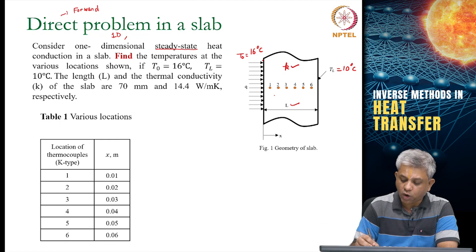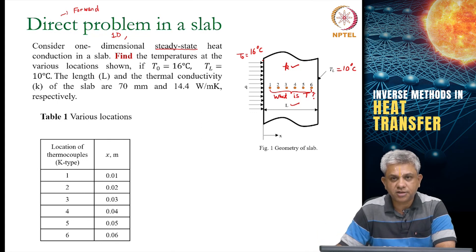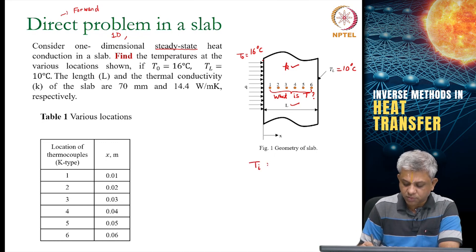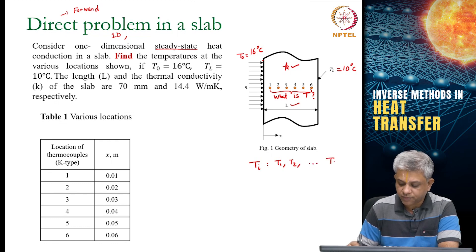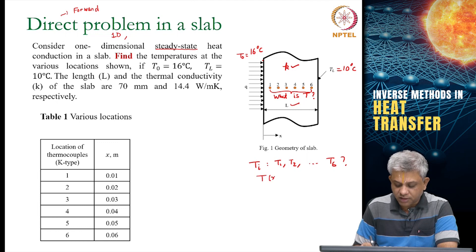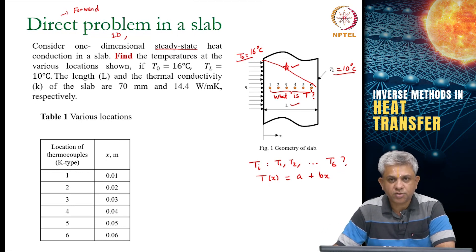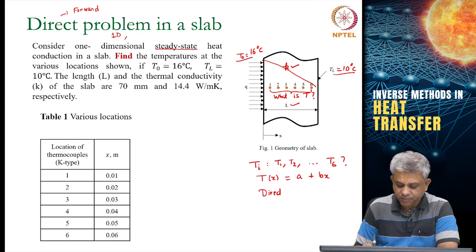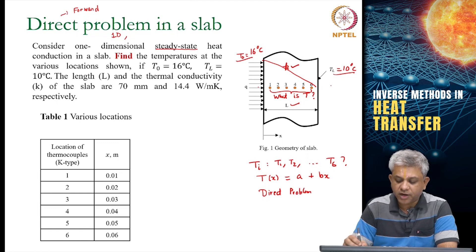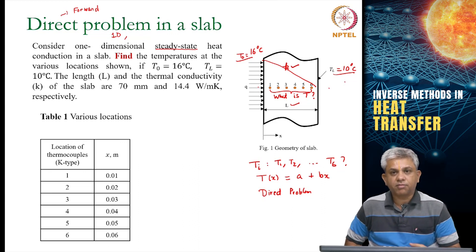What you are asked to find out is what are the temperatures at these six points, T1, T2 up till T6. This is a simple enough problem you would have already seen during your heat transfer class. You already know that the temperature is linear and given these two temperatures you can basically find out it is going to be a line going from 16 to 10 and you can easily solve for A and B. This is a straightforward direct problem: given the left and right temperatures, find out the temperatures within.